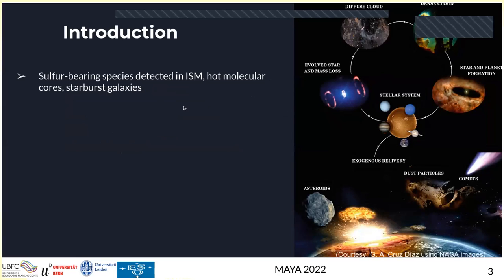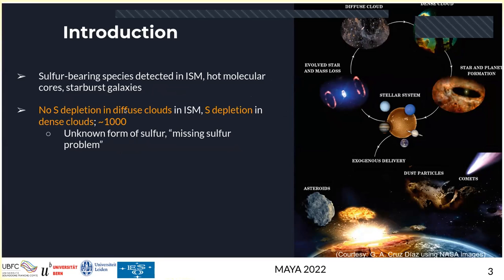Sulfur bearing species have been detected in many different regions in the universe, such as the ISM, hot molecular cores, and starburst galaxies. We observe that the total sulfur abundance in diffuse clouds equals the cosmic abundance, whereas in dense clouds there is a depletion of 1000 percent. This problem of missing sulfur in dense clouds is known as the missing sulfur problem in astrochemistry, and we still do not know where this missing sulfur is or in what form.